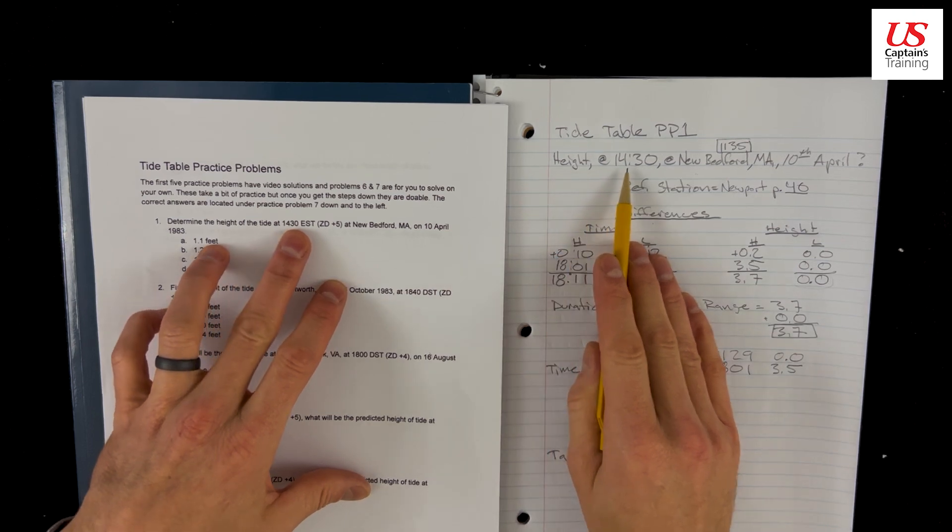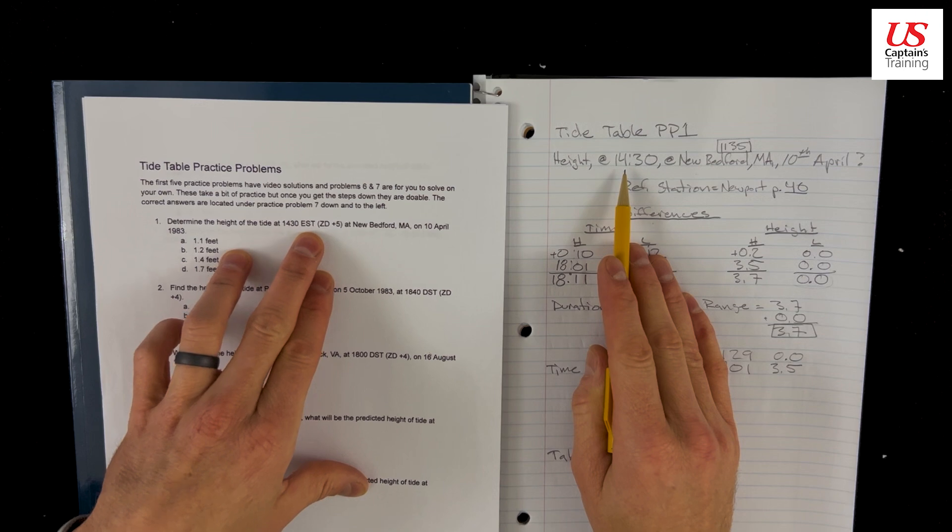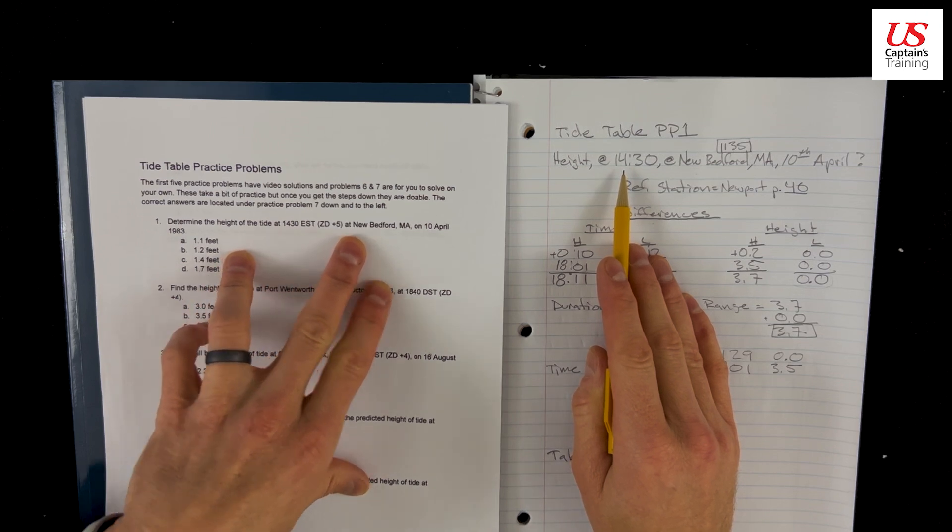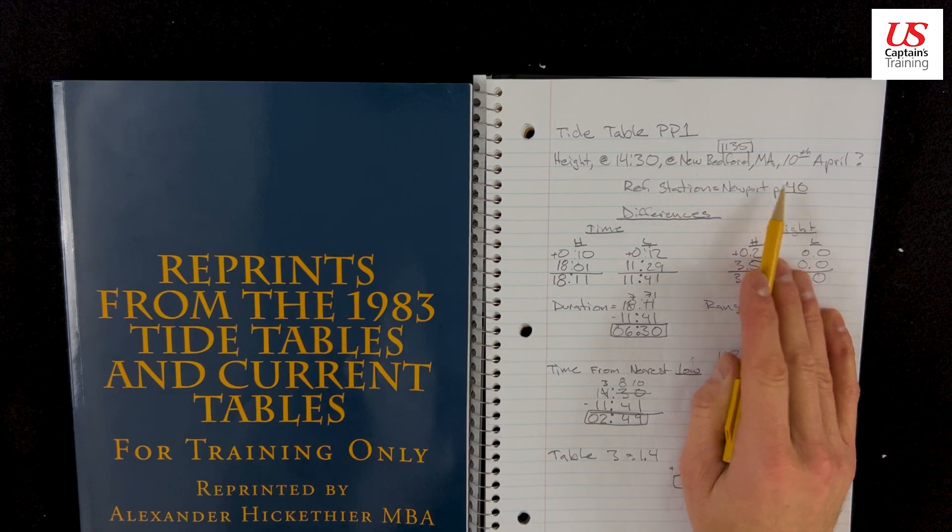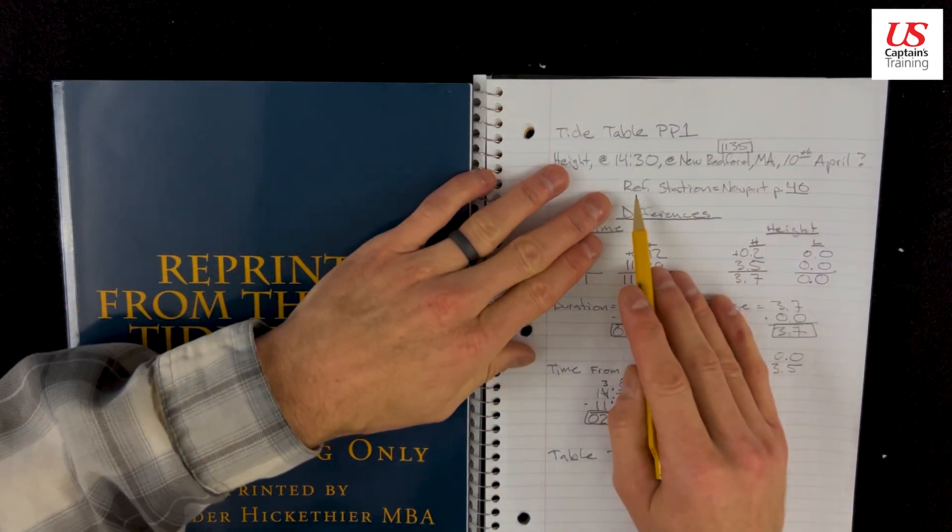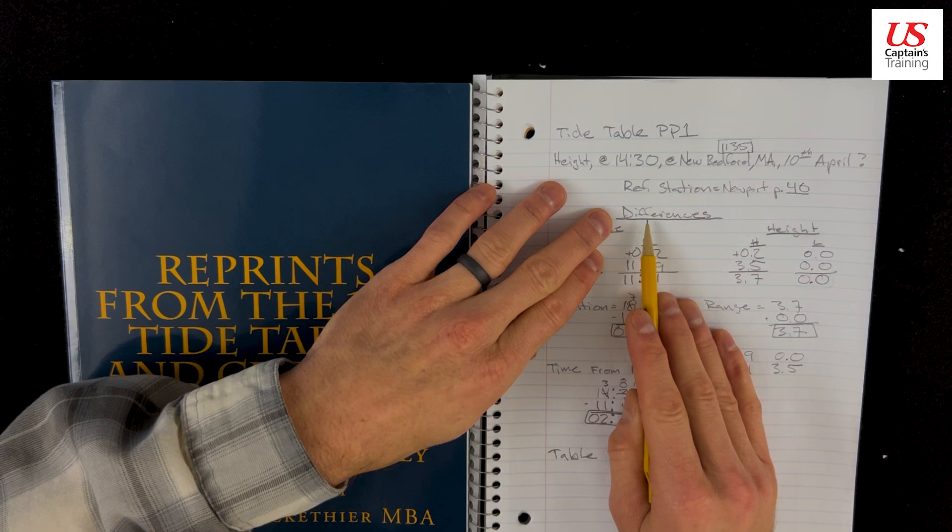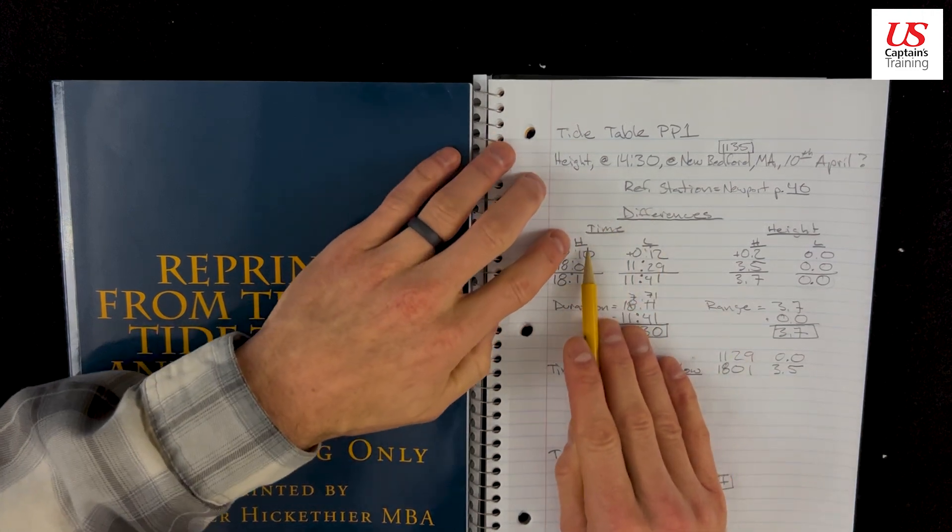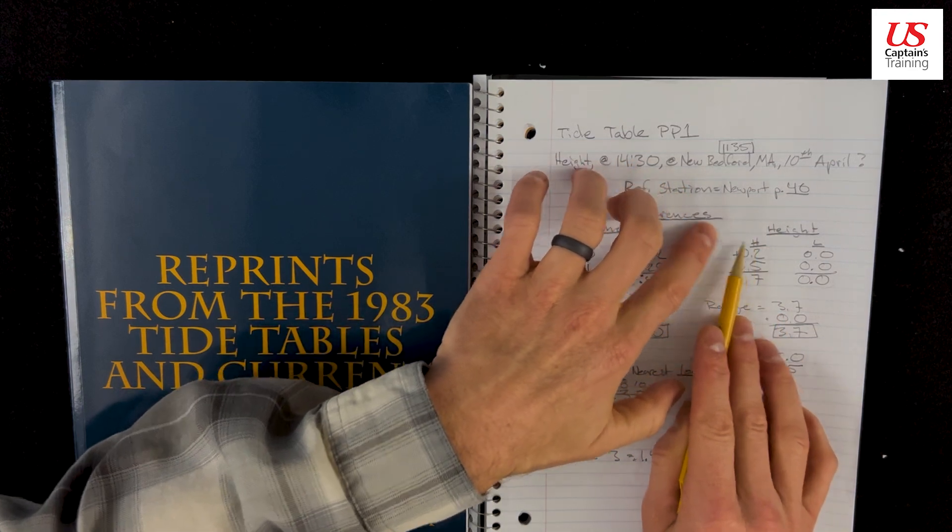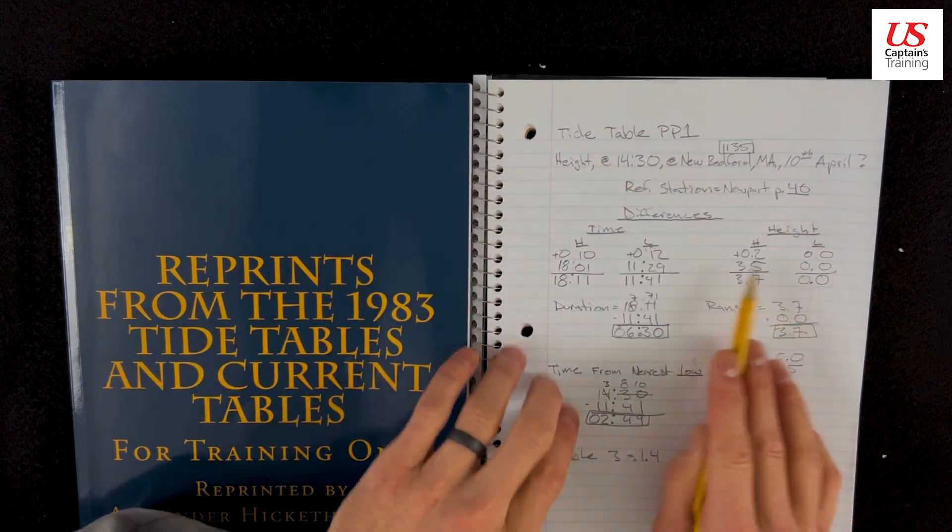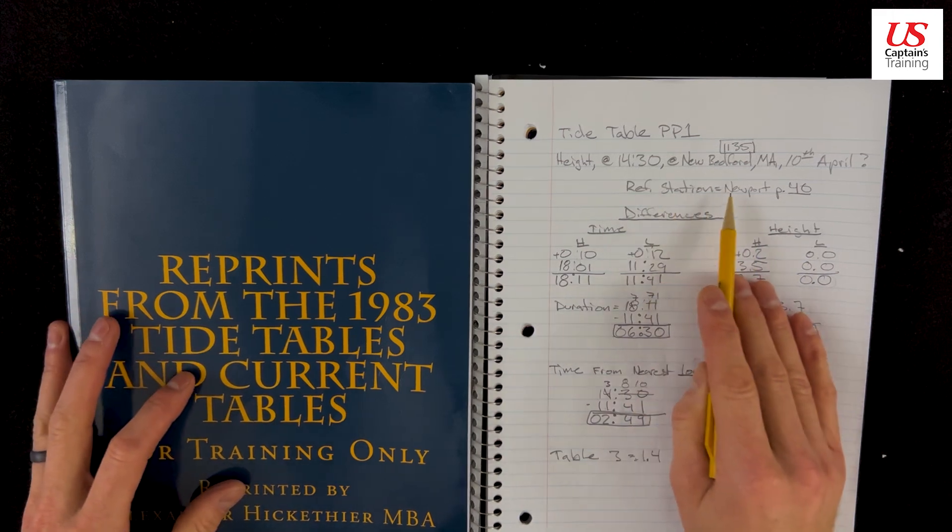The height at 14:30 EST, which means there's no daylight savings time, just Eastern Standard Time, at New Bedford, Mass, 10 April. We recorded that and then we set up our problem. We're going to get the reference station and we're going to get differences from the time high, differences from the time low, and differences from the height high and differences from the height low. So we set all this up.